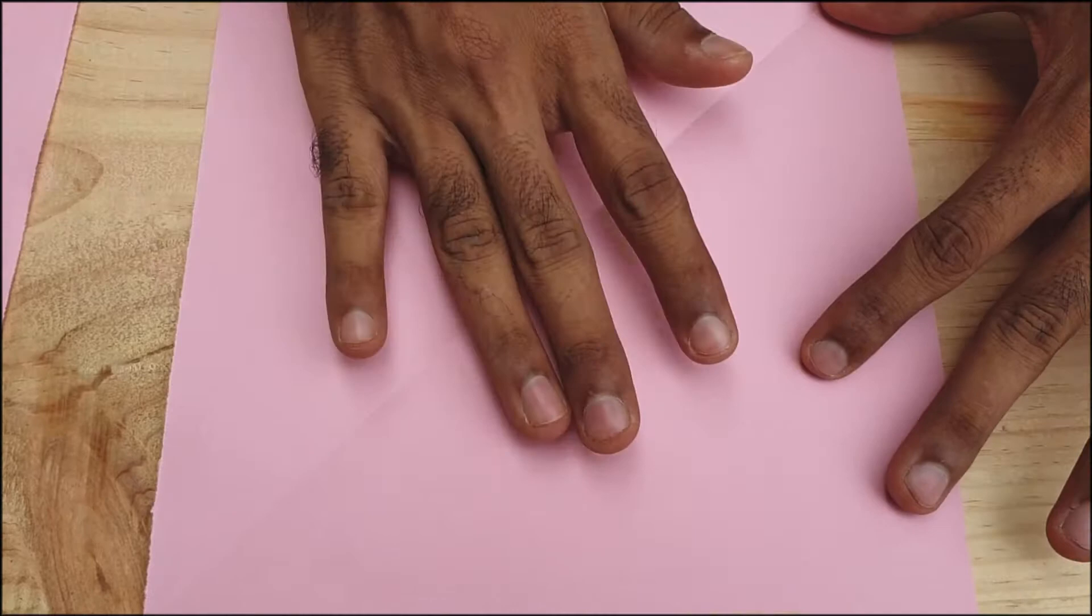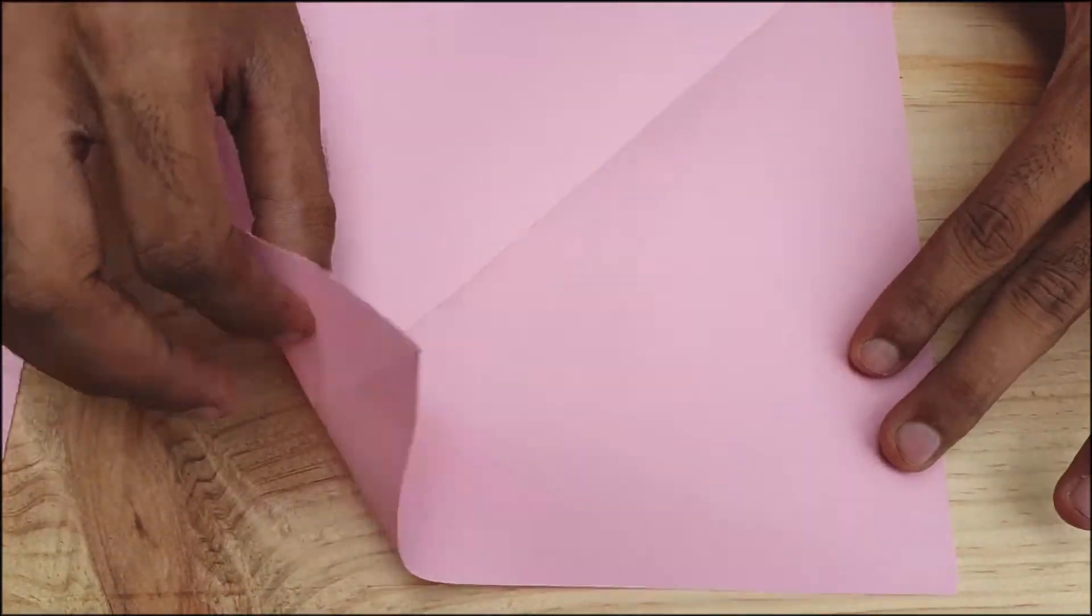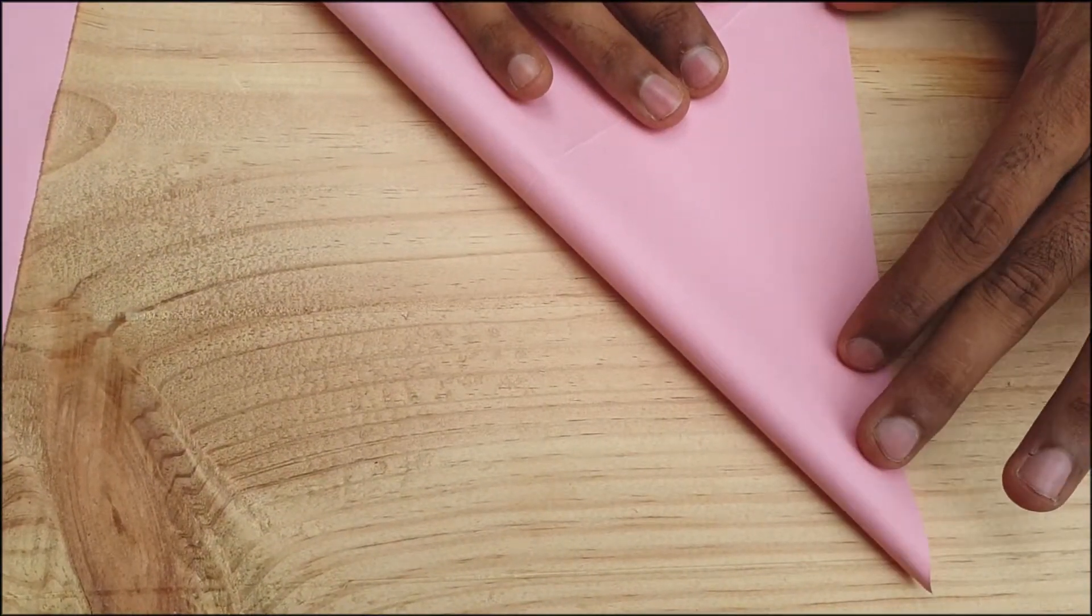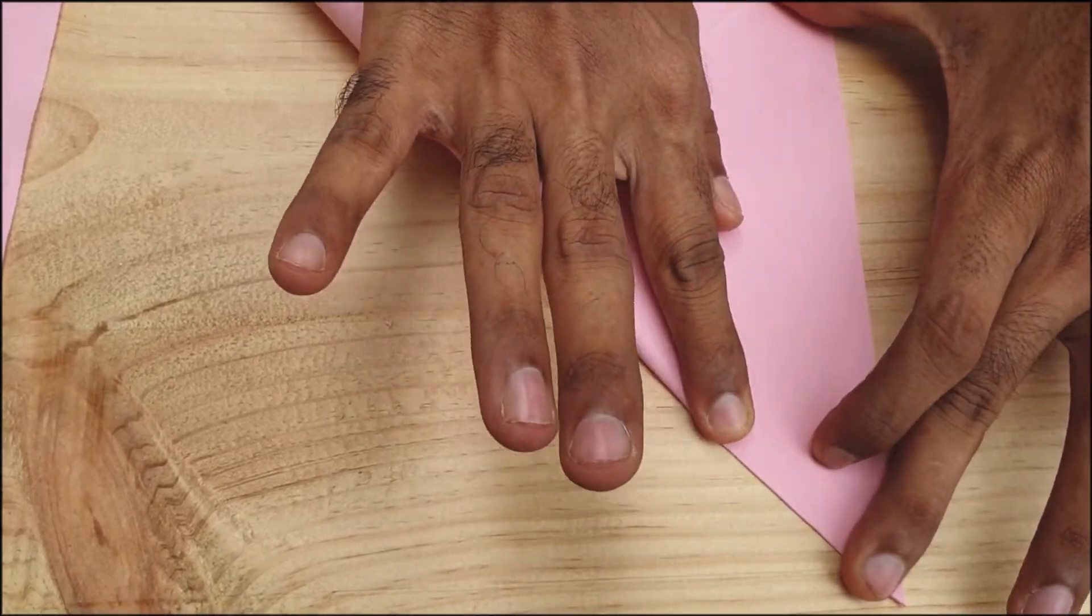After making the paper square, kindly fold that paper on the opposite side and scrape it with your finger to make two visible lines marked on both diagonals.